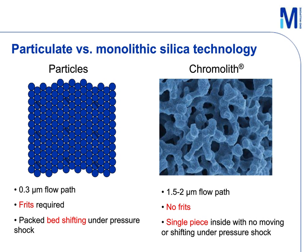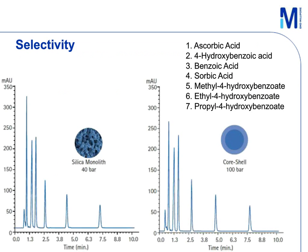Chemically, a particle and a silica monolith are exactly the same, which means there is no need to redevelop your existing method. Here is a comparison of separation performance: a monolithic column on the left versus a core-shell column on the right, both 4.6 by 50 mm, at 1 mL per minute flow rate. The selectivity is exactly the same for these seven analytes, and the monolithic column provides comparable — if not better — separation efficiency and faster separation than the core-shell column.